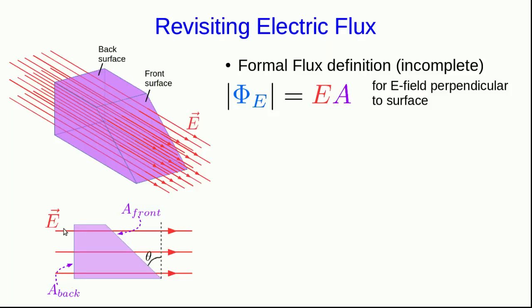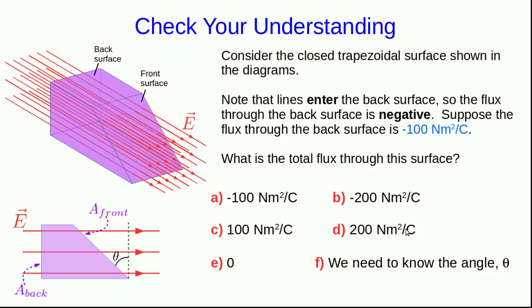Now, we're going to use this surface and work out what the flux through the front must be and use that to get the angle dependence. Well, to use this shape to figure out the angle dependence of flux, we're going to have to make a key argument. And you're going to understand this argument if you figure it out better than if I explain it to you.